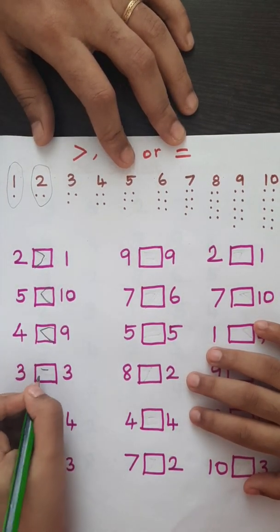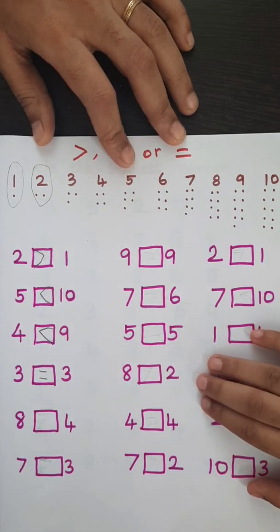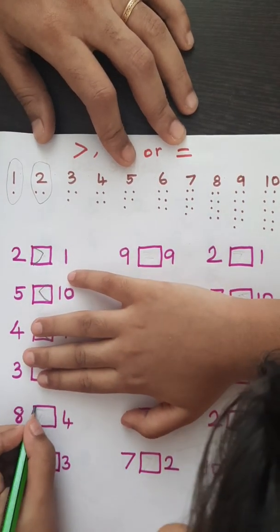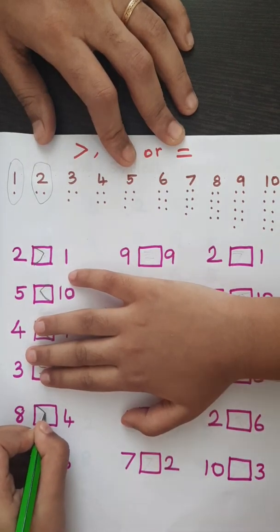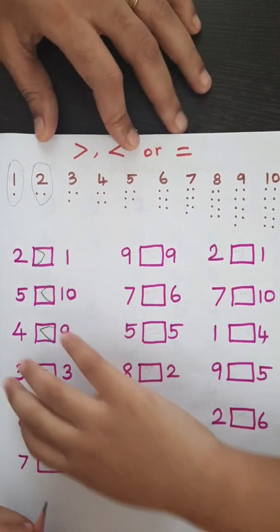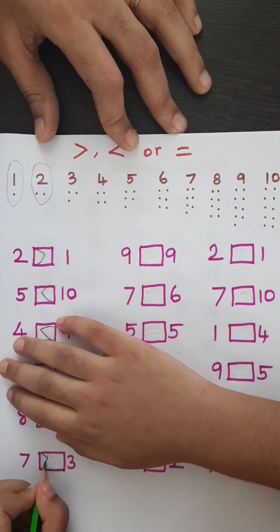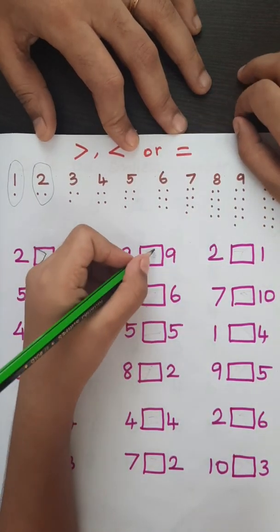Equal. So, 3 is also equal. 8 is bigger. So, 7 is bigger. So, equal.